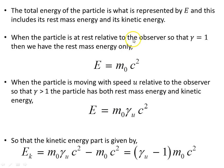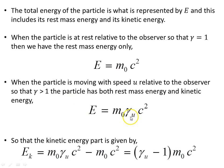When the particle is at rest relative to the observer, gamma equals 1, and the energy equals the rest mass energy only. When the particle is moving with speed u relative to the observer, gamma is greater than 1, and the total energy is E = m₀ gamma_u c². The difference between these two gives us the kinetic energy: total energy minus rest mass energy.